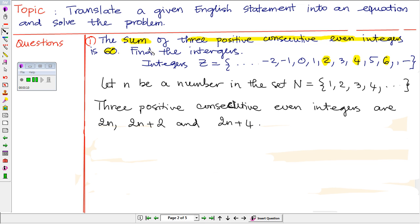We know that the sum of three positive consecutive even integers is 60. Therefore, 2n plus 2n plus 2 plus 2n plus 4 equals 60.